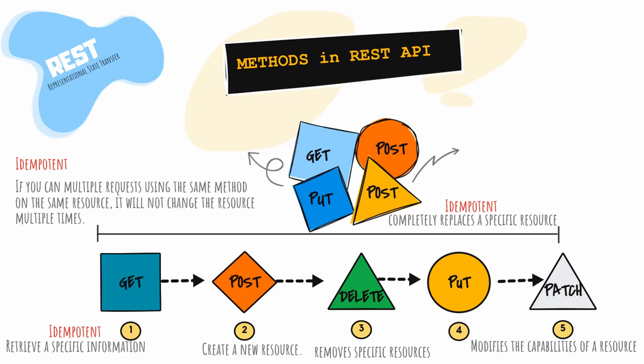Life is 10% what happens to us and 90% how we react to it. So we started with the methods in REST API. We started with GET, which is to retrieve a specific resource or a collection of resources; POST to create a new resource; and DELETE, which removes a specific resource.